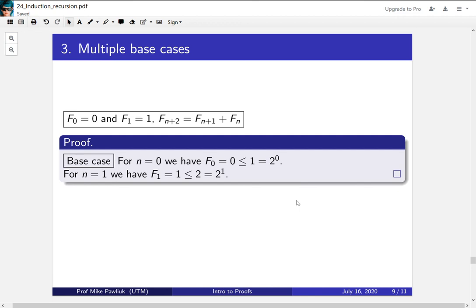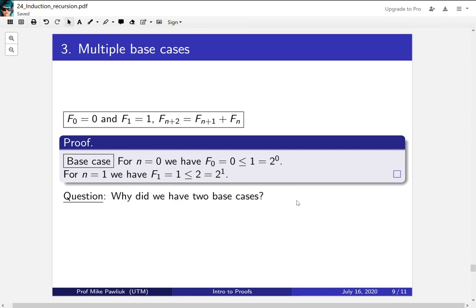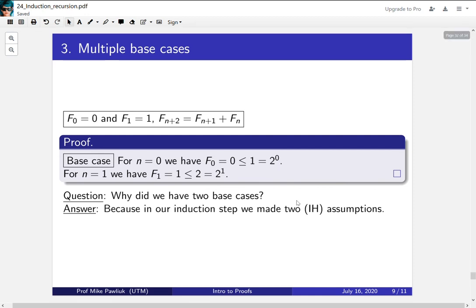So what's our base case in this case? Well, actually we have two base cases, n equals 0 and n equals 1. For n equals 0, we get F of 0 is 0, which is less than 2 to the 0, and F of 1 is 1, which is less than 2 to the 1. Now a common question is, why did we have two base cases? Well,